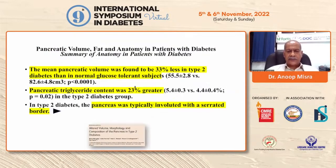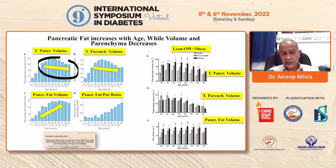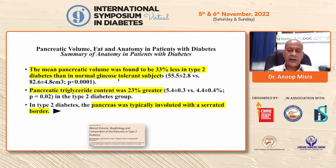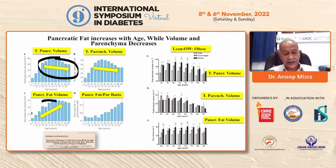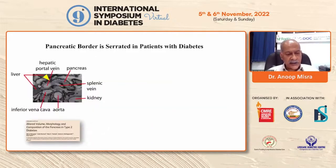This is the summary of anatomy in patients with diabetes. The mean pancreatic volume was found to be 33 percent less in type 2 diabetes than in people with normal glucose tolerance — similar to the effect of aging. Pancreatic triglyceride content was 23 percent greater in diabetes, again similar to aging. Another very interesting point is that in type 2 diabetes, the pancreas has typically involuted with a serrated border.